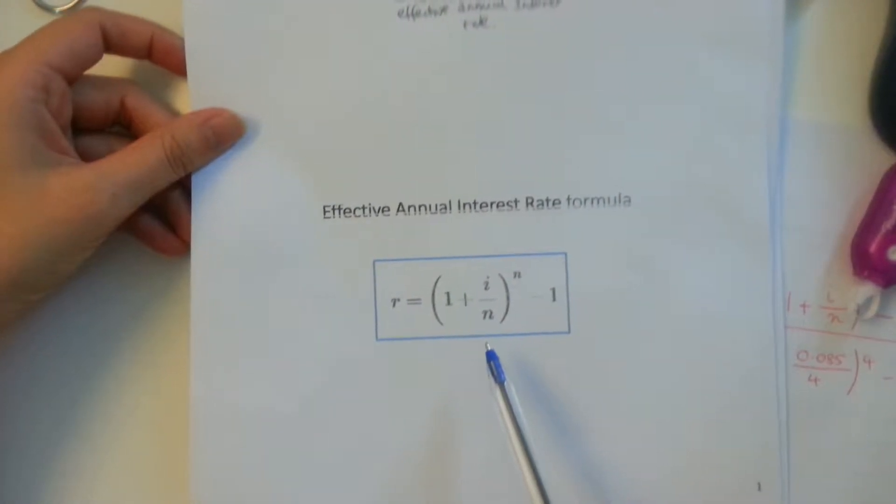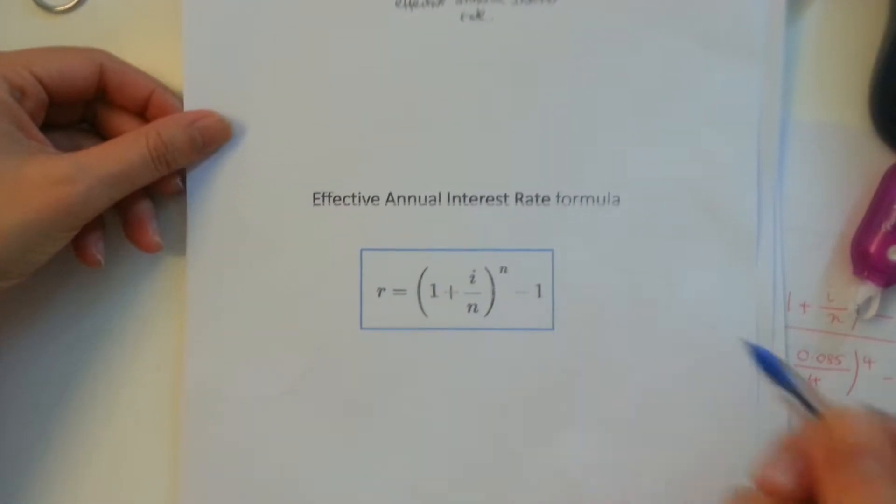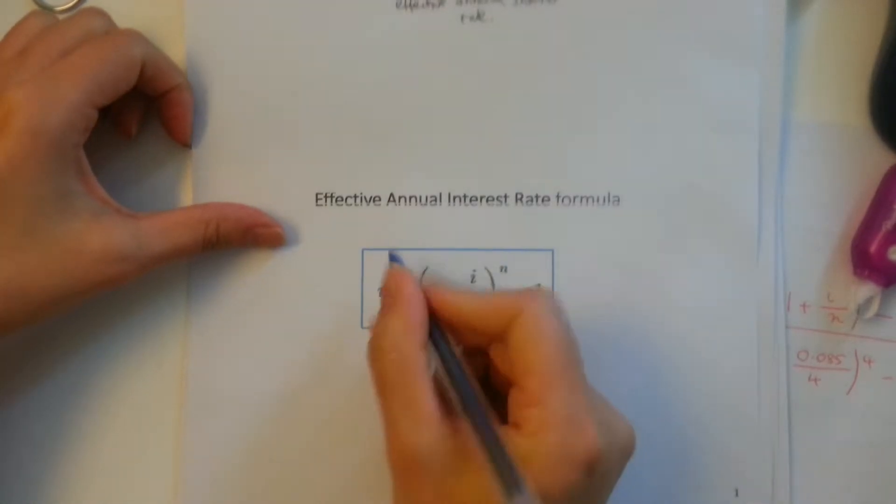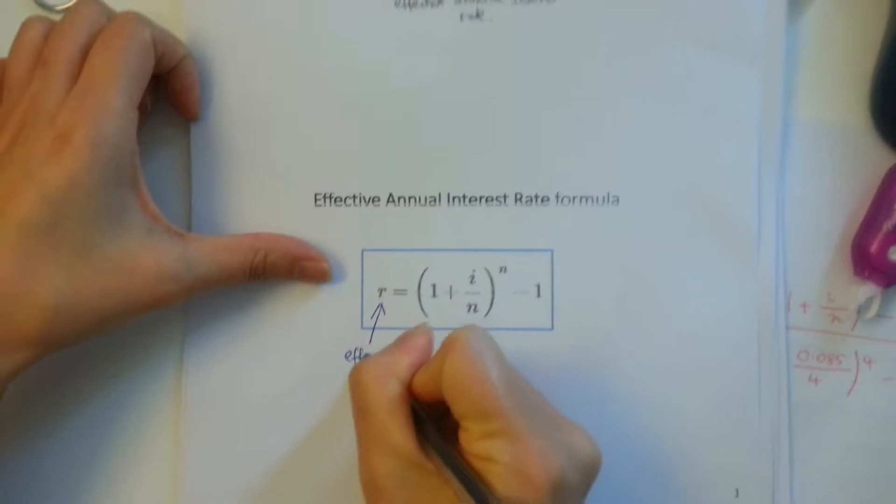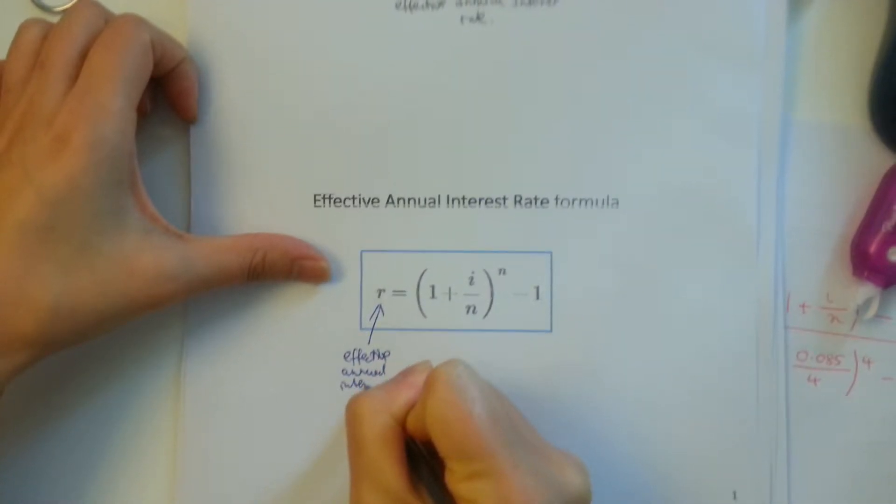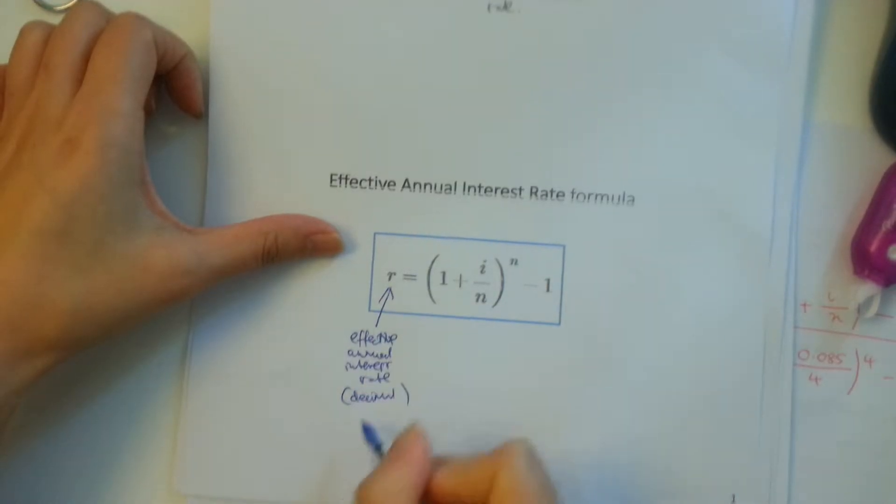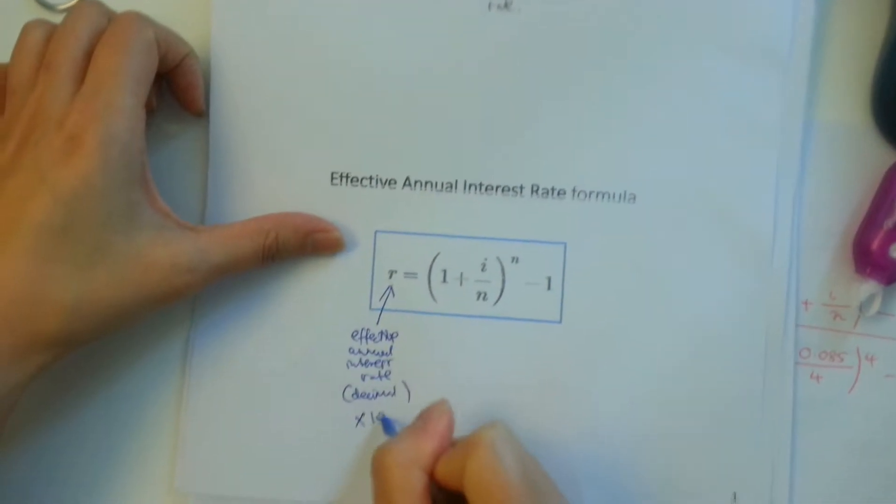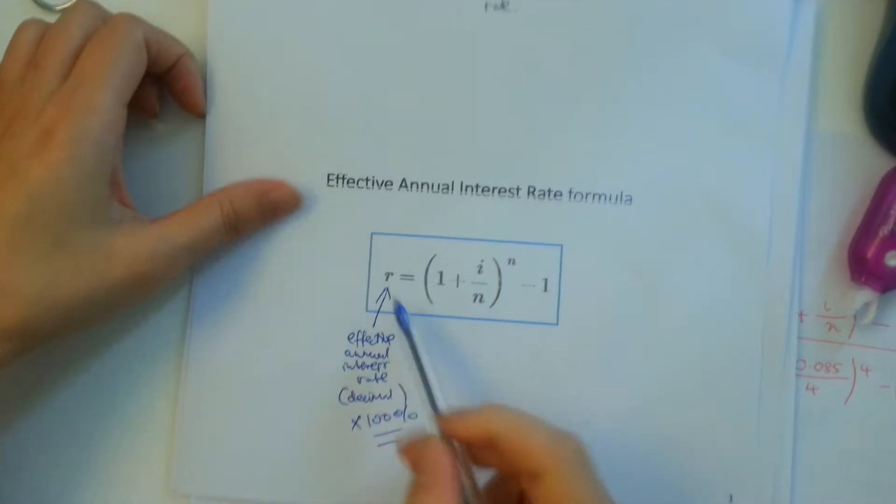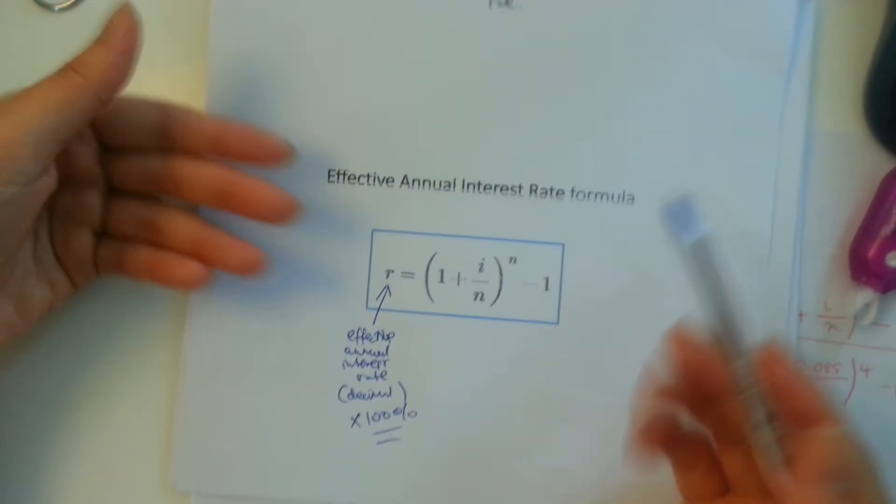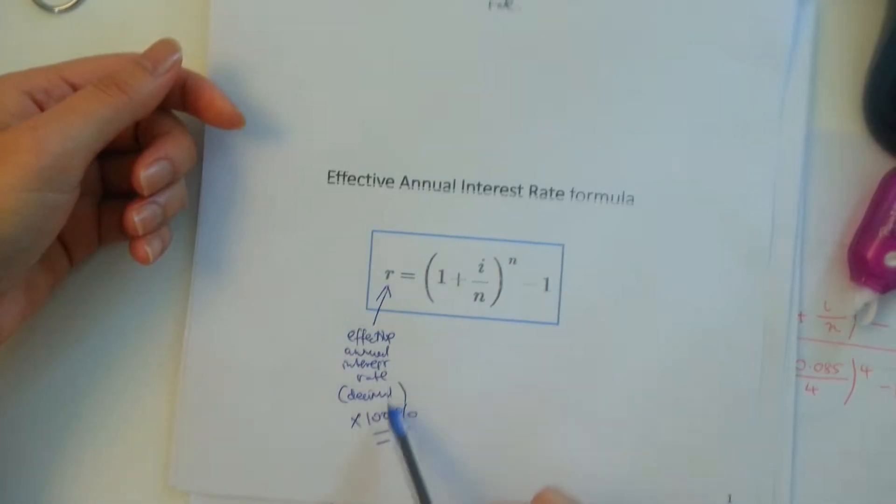And here is our effective annual interest rate formula. So let's jot down what each of them mean. Our R is our effective annual interest rate, which is going to be given to you as a decimal. So to make it make sense, you are going to times whatever answer you get by 100 to get it into a percentage. So it might come out as 0.15, which actually means 15%. So remember that.